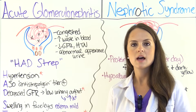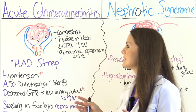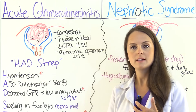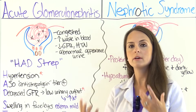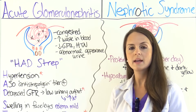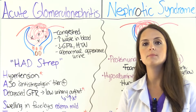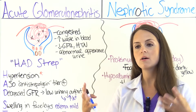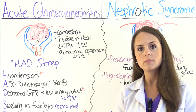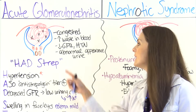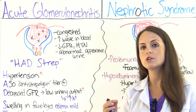Now let's look at the signs and symptoms of these conditions and how they differ. In acute glomerulonephritis, the antigen-antibody complexes have congregated in the glomeruli, inflaming it and making it permeable to red blood cells and proteins. Because the glomerulus filters the blood, having complexes inflaming and congesting it will decrease the ability to filter — resulting in a decreased GFR, or glomerular filtration rate.